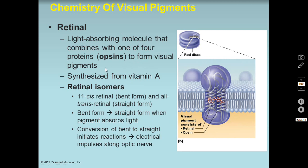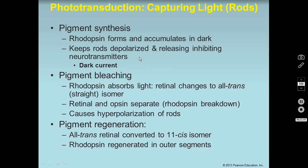We have four visual pigments: one for rods, called rhodopsin, and three others for each of our three different types of cones. Interestingly, in the dark, your eyes are actually already depolarized — counterintuitive as that seems. In the dark, rhodopsin continuously forms and accumulates, and that accumulation is what depolarizes the rods. When the rods are depolarized, they release inhibitory neurotransmitters onto the bipolar cells they synapse with — this is called the dark current.